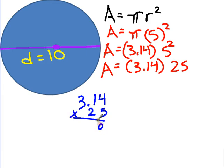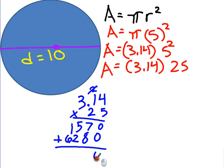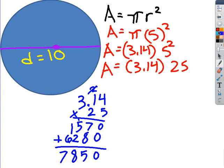5 times 4 is 20. 5 times 1 is 5, plus 2 is 7. 5 times 3 is 15. Put my 0 to hold its place. 2 times 4 is 8. Cross that because I don't need it anymore. 2 times 1 is 2. 2 times 3 is 6. I'm going to add them all up. 0 plus 0 is 0. 8 plus 7 is 15. 1 plus 5 is 6, plus 2 is 8. 1 plus 6 is 7.